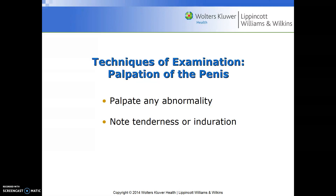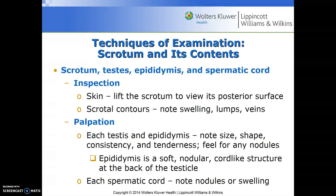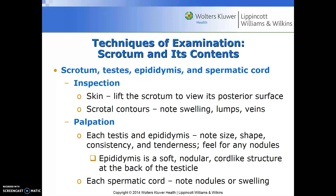Palpate for any abnormality and note any tenderness or induration. When inspecting the scrotum, testes, epididymis, and spermatic cord, don't forget the skin inspection — lift the scrotum to view its posterior surface, and ask the patient to move their penis out of the way. Assess scrotal contours, looking for swelling, lumps, and veins. Palpate each testis and the epididymis, noting size, shape, consistency, and tenderness, and feel for nodules. The epididymis is a soft, nodular, cord-like structure at the back of the testicle. Each spermatic cord also needs to be palpated, noting nodules, swelling, or tenderness.